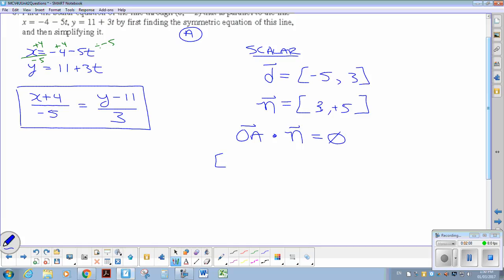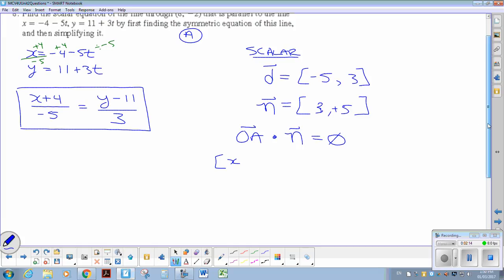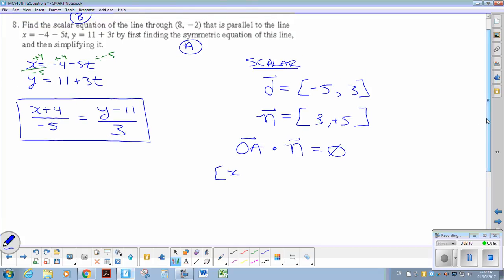So this becomes x, and what was the point? Scroll up a little bit here, I can't see it. There it is, 8 negative 2. So there'll be x minus 8, y plus 2, dot my normal, which is 3, 5, equals 0.